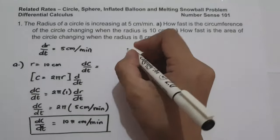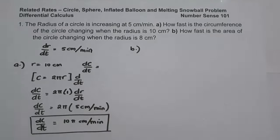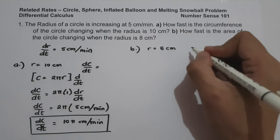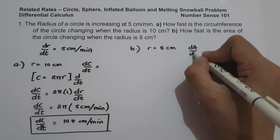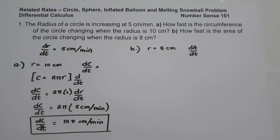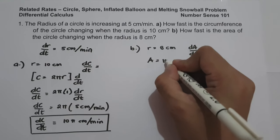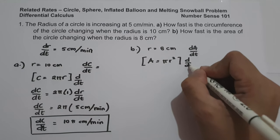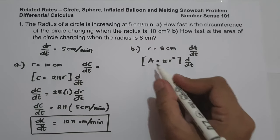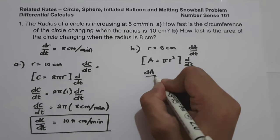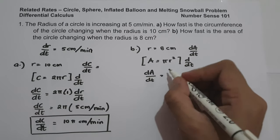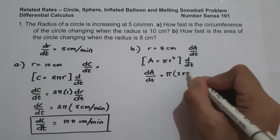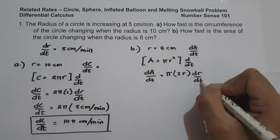On letter B, how fast is the area of the circle changing when the radius is 8 cm? This time we are looking for dA/dt. The formula for the area of the circle is A equals πr². Let us differentiate both sides of the equation with respect to time. The derivative of A with respect to time is dA/dt equals π times 2r times dr/dt.